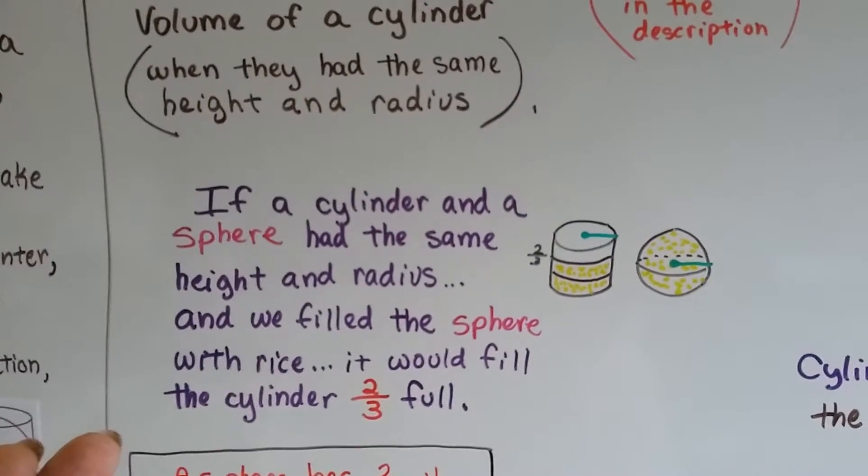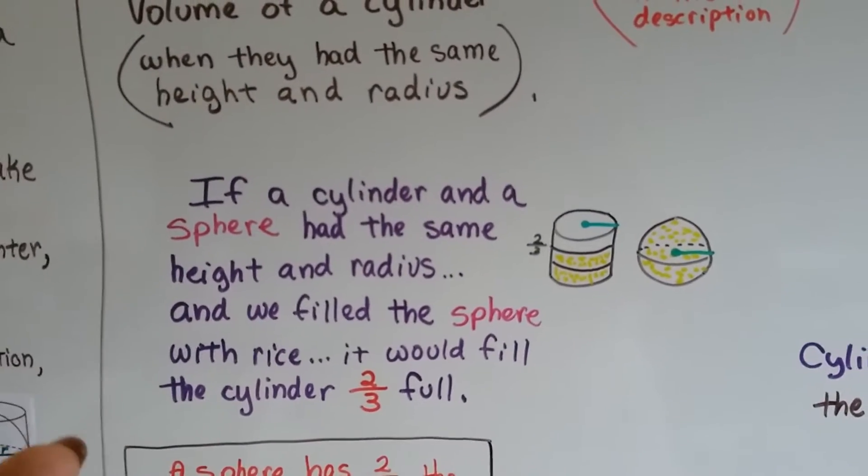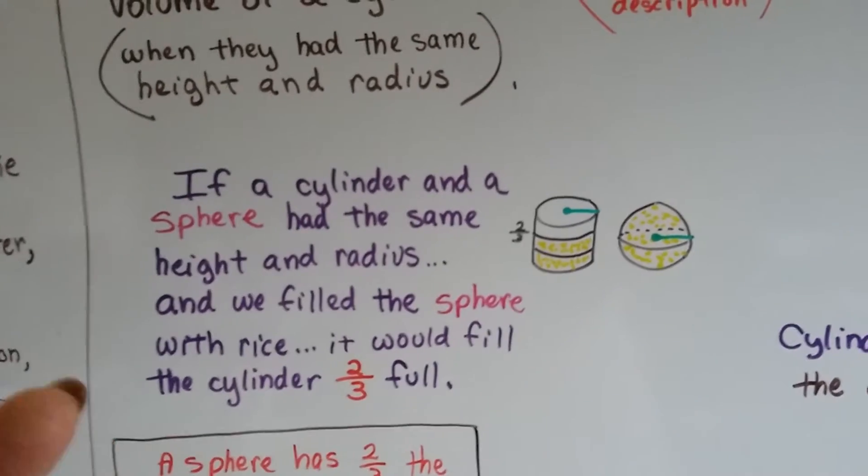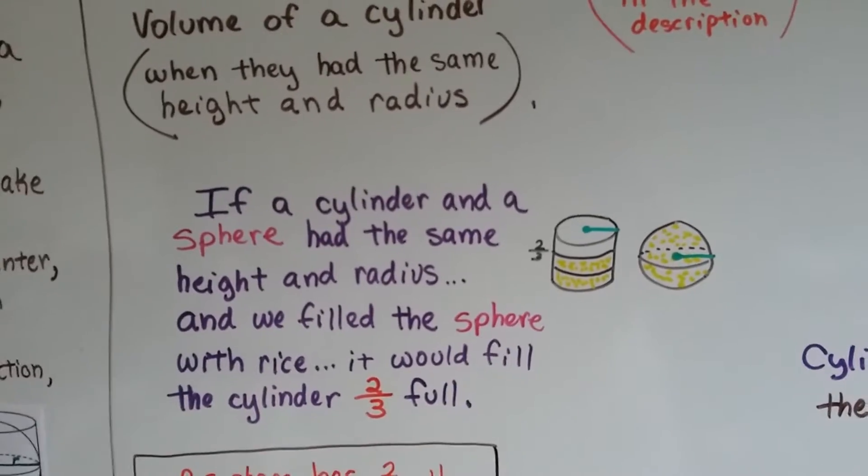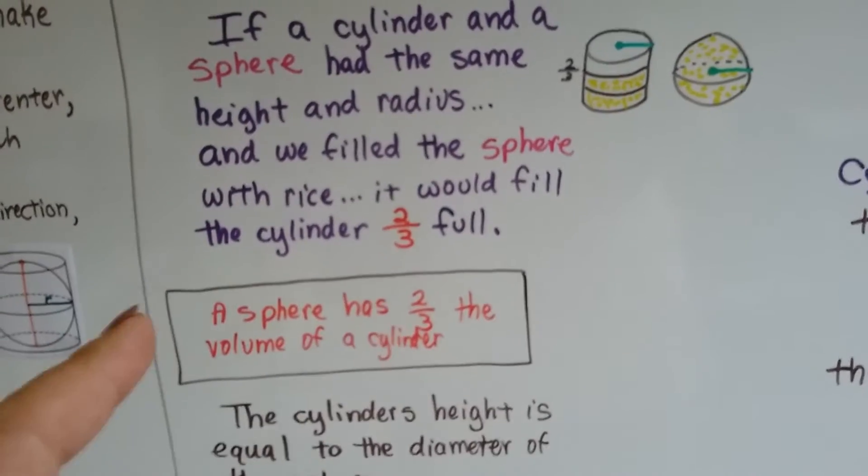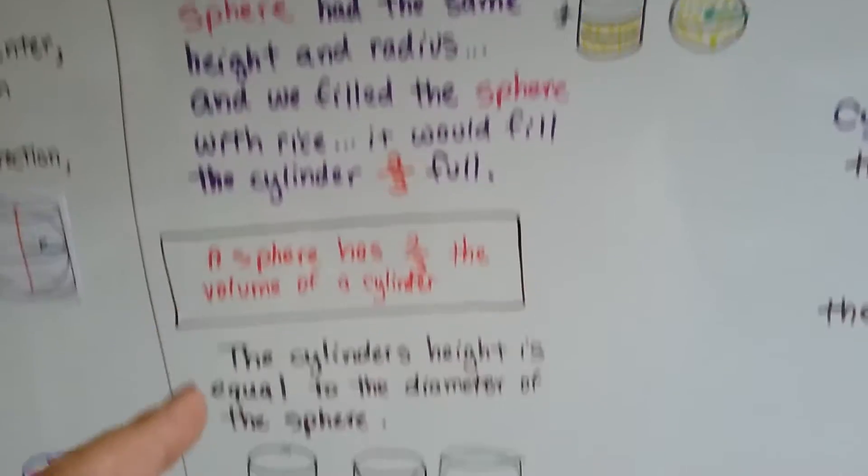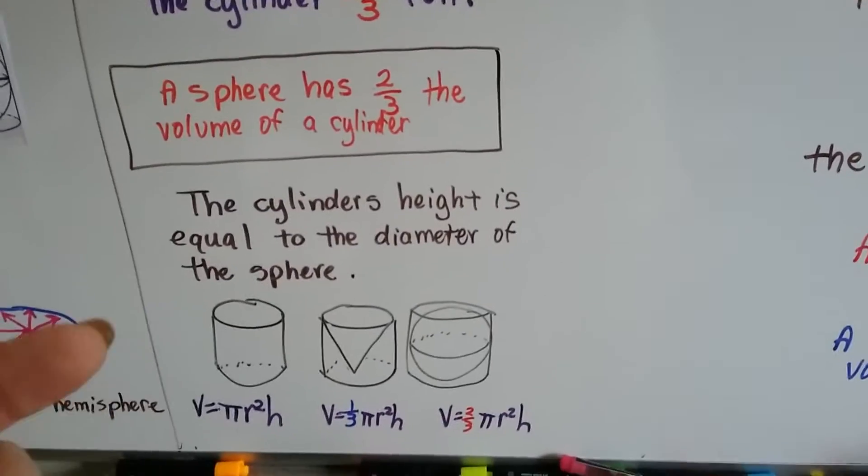Well, if a cylinder and a sphere had the same height and radius, and we filled the sphere with rice, it would fill the cylinder two-thirds full. A sphere has two-thirds the volume of a cylinder. The cylinder's height is equal to the diameter of the sphere.